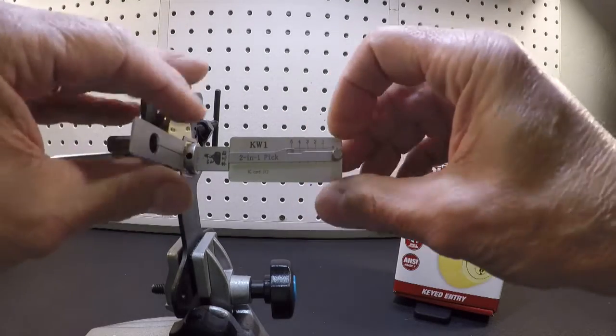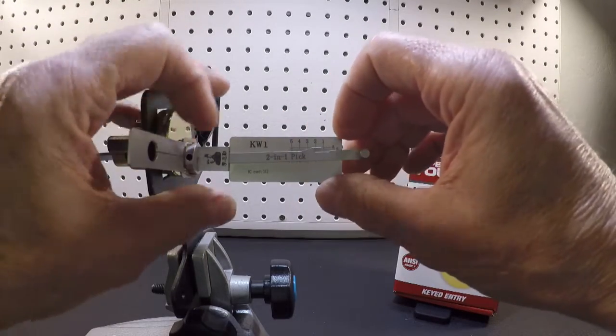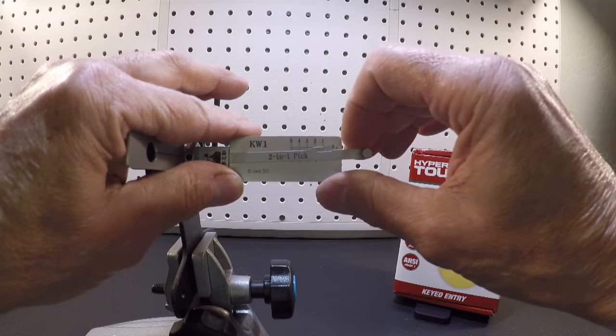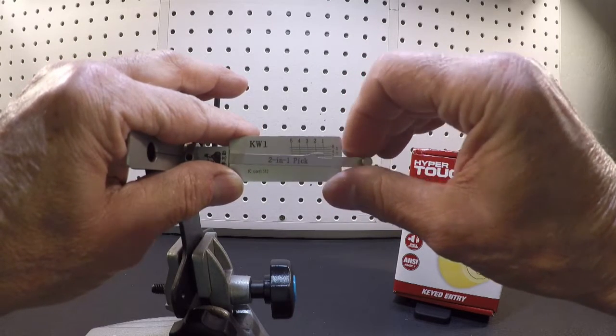Now neutralize to the center position on the lock and let's pick it the other way just for the sake of explanation. Let's start at the one position this time.